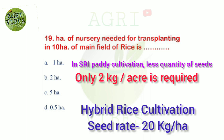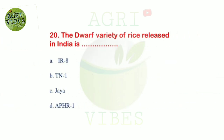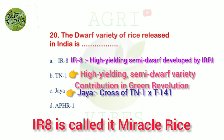Next question: how much hectare of nursery is needed for transplanting in 10 hectare of main field of rice? Options: 1 hectare, 2 hectare, 5 hectare, and 0.5 hectare. Correct answer is 1 hectare — 1 hectare of nursery area is required for plantation of 10 hectare area. Next question: the first dwarf variety of rice released in India is — options: IR8, TN1, Jaya, and PHR1. Correct answer is option C, Jaya. TN1 is the semi-dwarf variety.